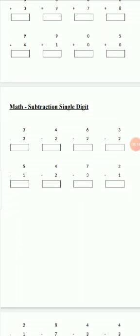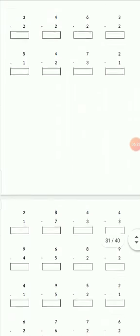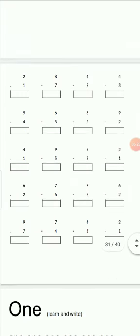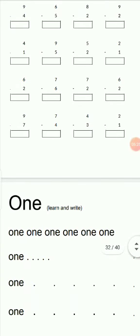Subtraction single digit questions — subtraction means minus, cross out. Draw three lines, then cross two lines. How many left? One line — write one. You have to do all these questions.